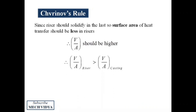So volume per unit area of a riser should be higher than the casting. Inversely, I can write that the surface area by volume of the riser should be minimum.